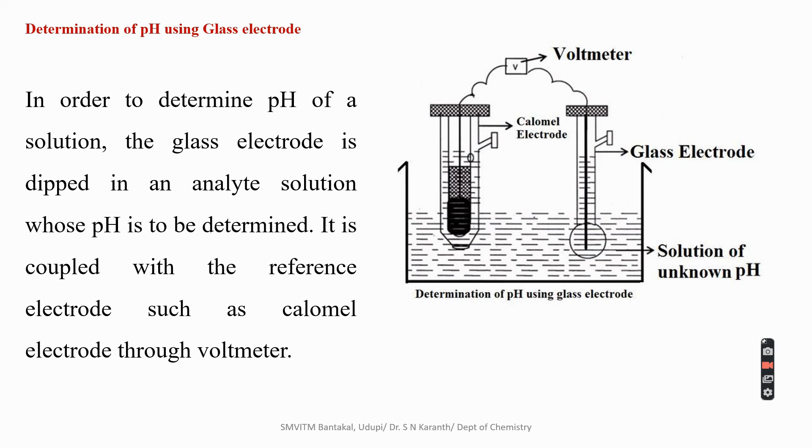In order to determine the pH of a solution using glass electrode, we have to construct a cell. In a cell there are two electrodes. One electrode is a glass electrode and second electrode is a calomel electrode. By convention, the glass electrode I take it as a cathode and the calomel electrode I place as an anode.